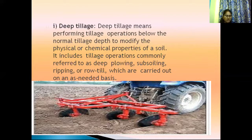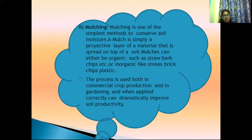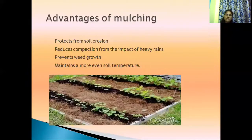Deep tillage means plowing, planking, deep ripping, and subsoil methods — these help to increase the soil moisture content. Mulching is of different types: organic and inorganic. Organic mulches include straw, bark, and leaves, hops, grass clippings, and chip straw. Inorganic mulches include stone bricks, stone brick chips, plastic, stones, pebbles, gravels, and recycled rubber ties. These are the different techniques for mulching — organic and inorganic mulches for conserving the soil.